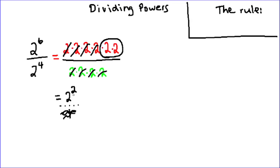2 to the power of 2. Now like multiplying powers with the same base, you can actually see that there's a pattern here. Let's focus on the exponents — instead of adding, we have 6 minus 4, and that actually gives us 2.